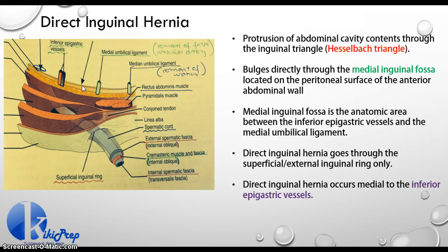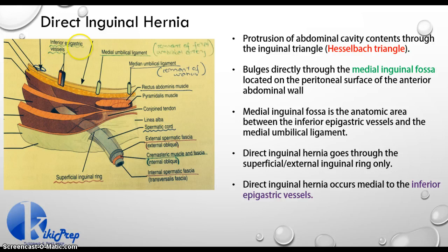This is the most common location of your direct inguinal hernia. Your direct inguinal hernia is occurring medial to your inferior epigastric artery but lateral to your medial umbilical ligament. You can also see that our direct inguinal hernia, being medial to my inferior epigastric artery, is not very close to my deep inguinal ring. Therefore, my abdominal cavity contents do not fall into this ring — they only protrude on that weak area of my Hesselbach's triangle. As a result, only my superficial or external inguinal ring is affected in my direct inguinal hernia.